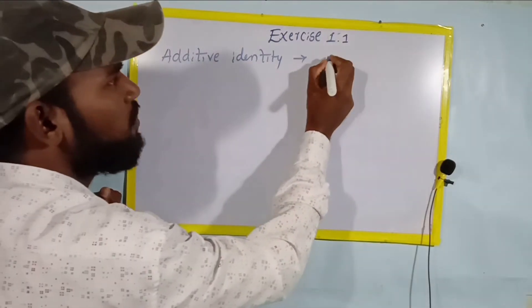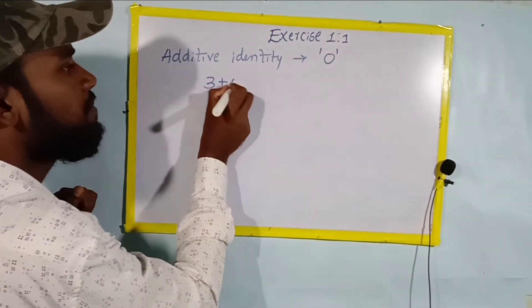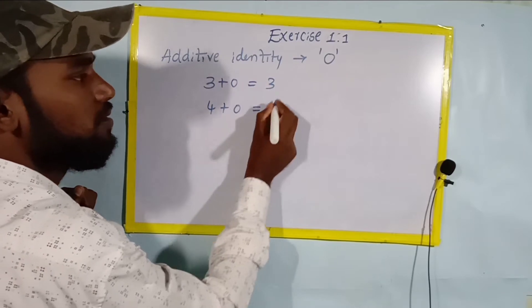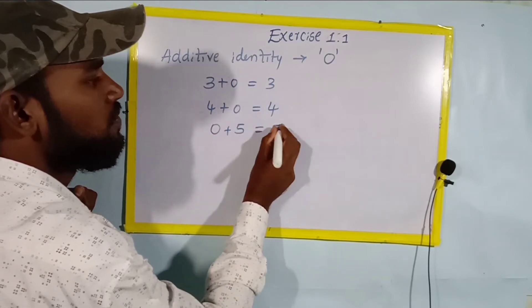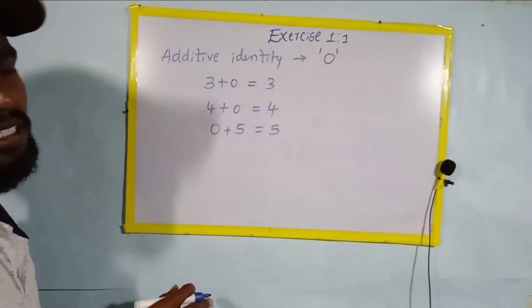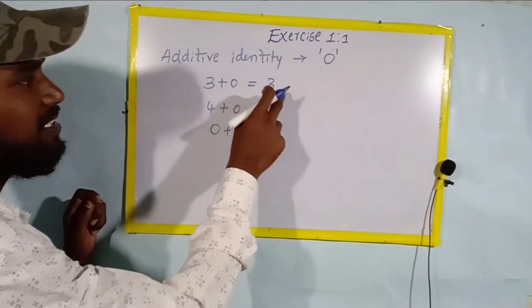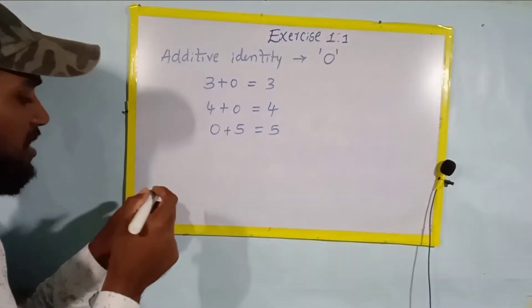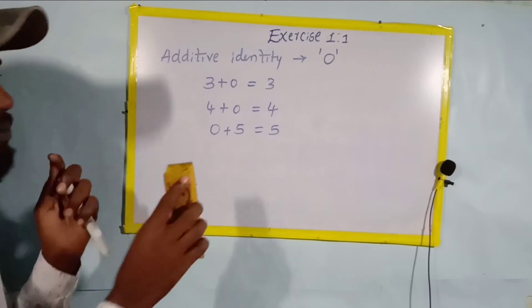Now, additive identity is zero. Why is zero the additive identity? See here: three plus zero equals three, four plus zero equals four, zero plus five equals five. If you add zero to any number, the answer is that number only. So zero is called the additive identity.